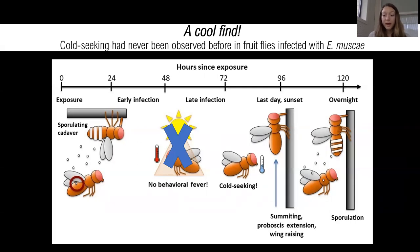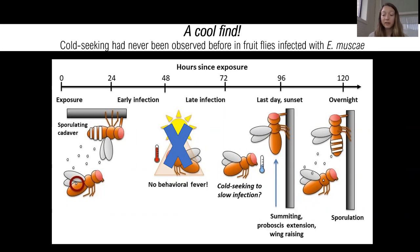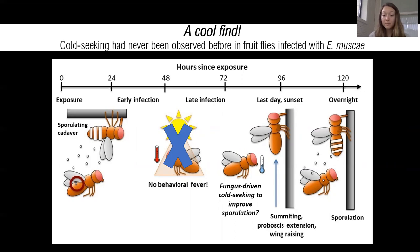Now we wanted to know who was causing this cold-seeking behavior. Another immune response that some ectotherms use is cold-seeking, and this has actually been seen in fruit flies infected with a few different pathogens. By cold-seeking, an ectothermic animal can slow the spread of infection, and this might be what we were seeing in our E-muskie infected flies. Interestingly, cold-seeking has also been observed in house flies infected with E-muskie, but only on the day of death from infection — like we saw in our fruit flies. Researchers speculated that this thermal preference was caused by the fungus, not the fly, because it can release spores more effectively at lower temperatures.